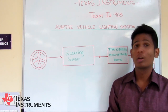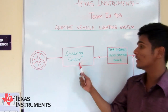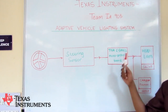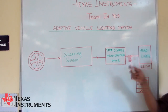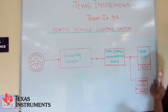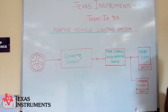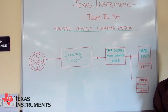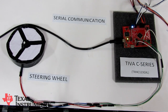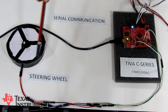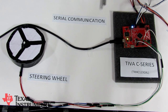Our second part is to control the headlights during turns or curves. A sensor is attached to the steering wheel which detects the position of the steering wheel, and the data is fed to the Tiva C-Series microcontroller board, which then controls the headlights such that the curved path is properly illuminated. The microcontroller also controls the position of the camera so that while taking a turn, if a vehicle approaches, it can be detected and proper actions can be taken.